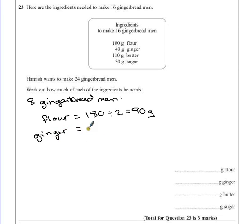So, ginger is going to be 40 divided by 2 which is 20 grams. Butter is 110 divided by 2 which will give me 55 grams.